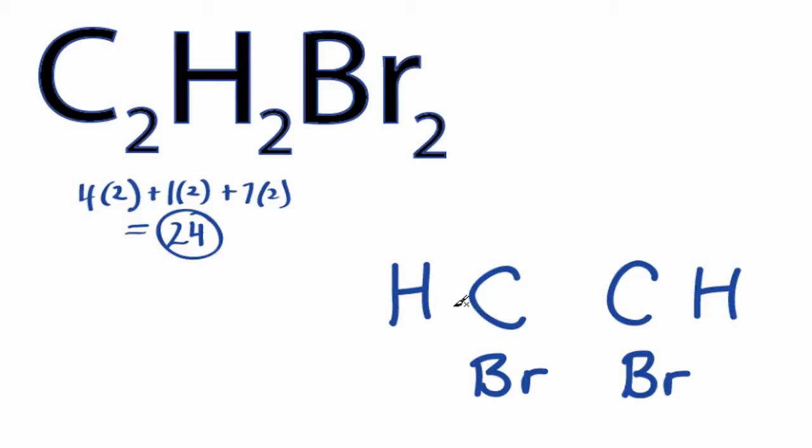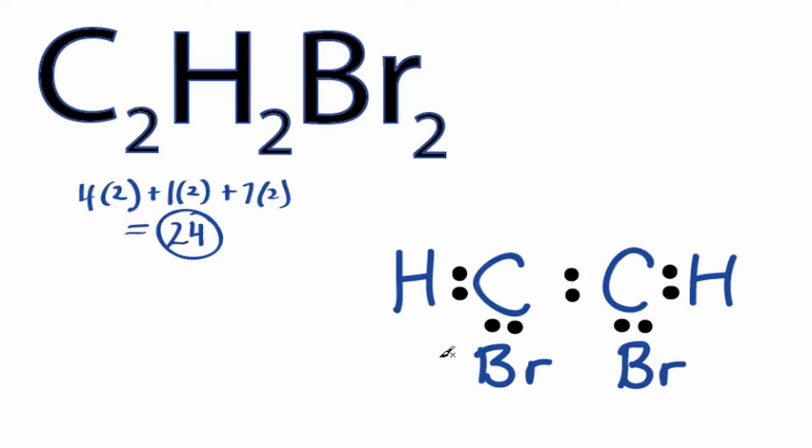We have 24 valence electrons. We'll put 2 between atoms to form chemical bonds. We've used 10, and then complete the octets on the bromine, 12, 22. Now back to the central carbons, 24, and we've used all 24 valence electrons.